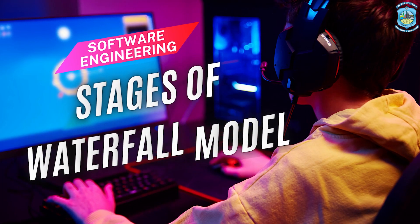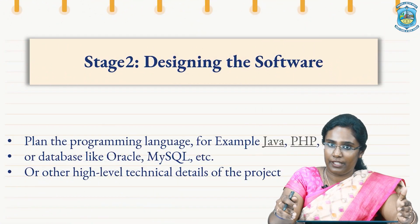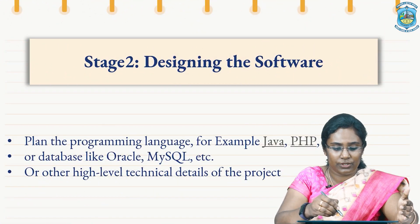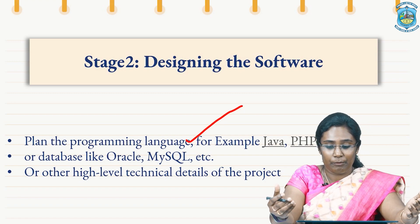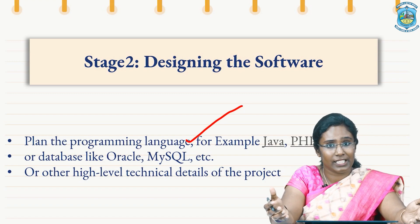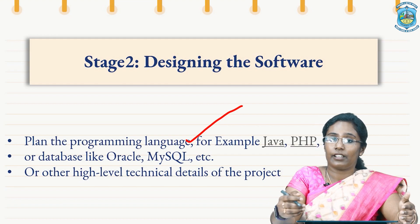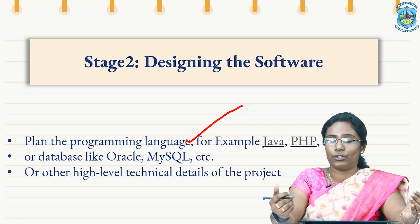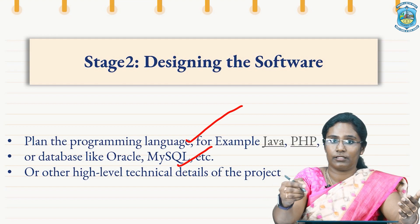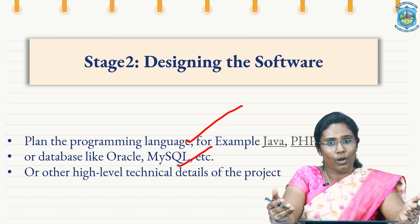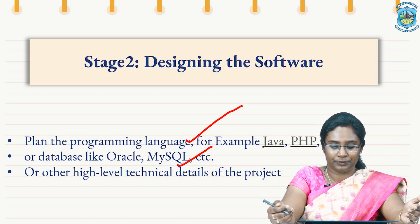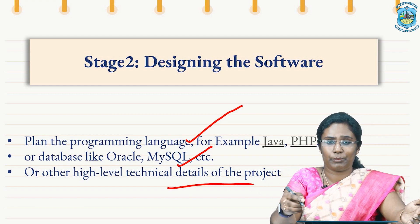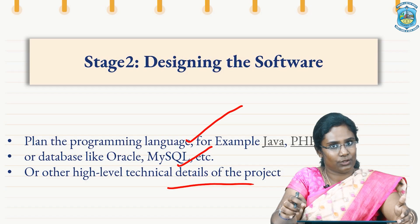The second stage is designing the software. Here, the preliminary details like what programming languages are to be used — for example Java, PHP, .NET, C++ — and what database we are going to select, whether we are opting for MySQL or Oracle, are decided. Whatever database we are going to opt for will be decided here, and other high-level technical details of the project are also fixed in this stage.